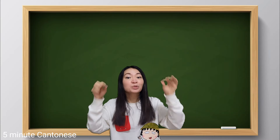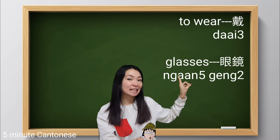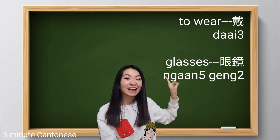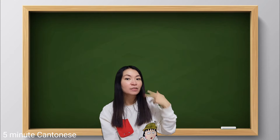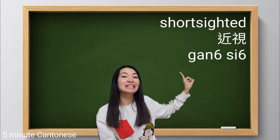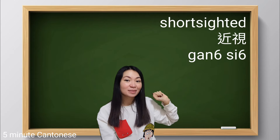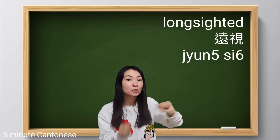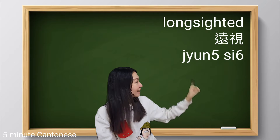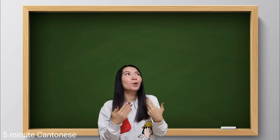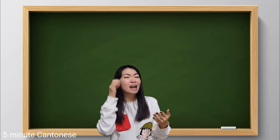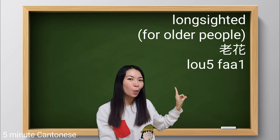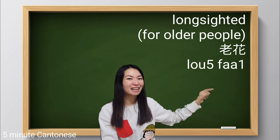Last but not least, for example if you need to wear glasses, how do you say to wear glasses? 戴 — 戴眼鏡. Normally it's because of short-sightedness — 近視 — or long-sightedness — 遠視. Remember 遠 means far. For more mature people who need to hold things far to see, we use another term: 老花.